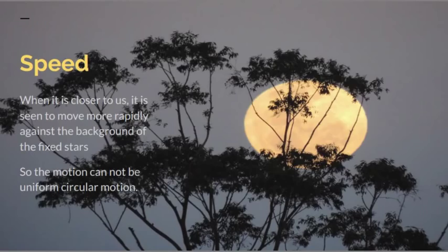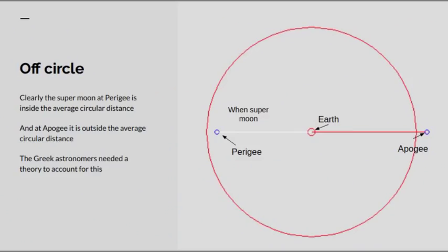Also, when it's a supermoon, it's seen to move more rapidly against the background of the fixed stars. So not only is the motion evidently not circular, it's not uniform either. So it's not uniform circular motion. It has to be some other type of motion. So this is something that they were driven to by empirical observations.